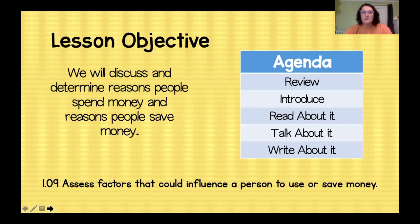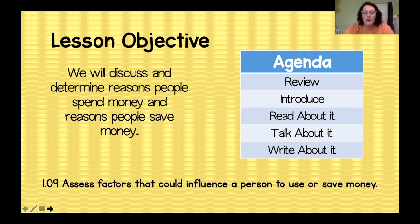Our lesson objective: we will discuss and determine reasons people spend money and reasons people save money. On our agenda today, we're going to review what we've learned in Knox County at-home lessons, review those terms, introduce our new topic, read about it, talk about it, and write about it.